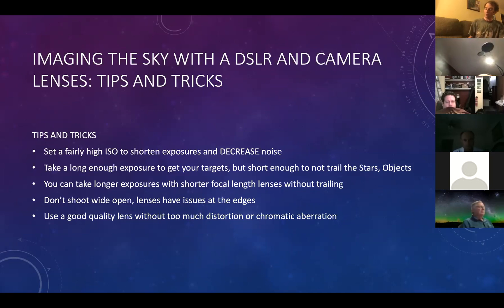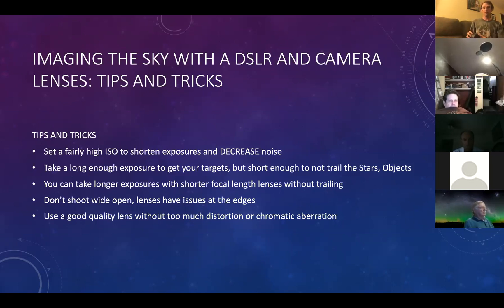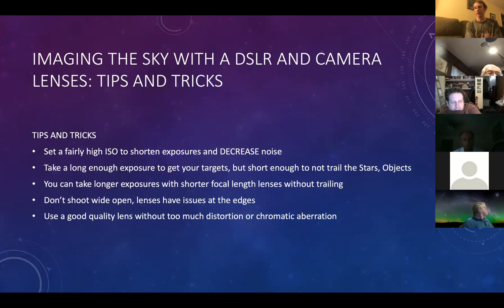You can use the live view feature on many DSLRs to focus — the stars show up in live view and you can focus on them, which is a great advantage over old film cameras. Also note that with a smaller number of millimeters — a wider field of view — you can take longer exposures because the apparent trailing of stars in your image will be much smaller. Take a photo and see how it looks; if you're not bothered by the trailing of the stars, you're good.